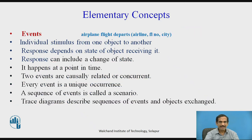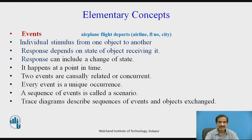Events like an airplane flight departure, which can use attributes such as airline, flight number, or city, are individual stimuli from one object to another. The response depends on the state of the object which is receiving it, and it includes a change of state that can occur. It happens at a particular point in time. Two events may follow each other, and then they are called causal.